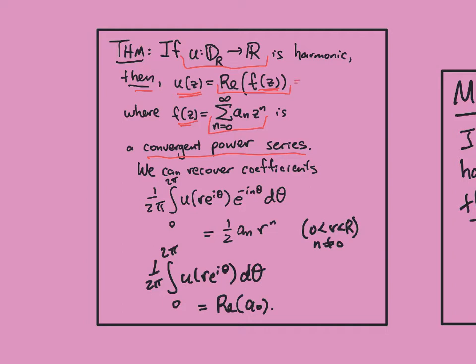This will mean that u is a power series in z plus a power series in z bar, and this will in particular mean that it's real analytic, so it can be represented in a power series of x and y, and also that it's infinitely smooth and so forth. That'll carry over to open sets where this will be true locally, so we'll know that locally harmonic functions are representable by the real part of a power series.